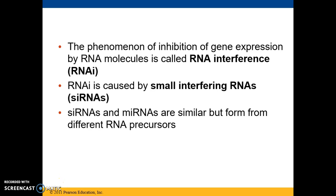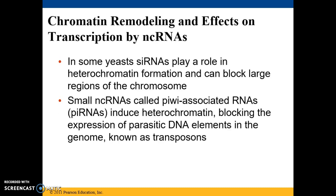Non-coding RNA can impact translation of mRNAs, but they can also impact chromatin structure. In some yeast, small interfering RNAs can play a role in heterochromatin formation — that highly condensed form that blocks regions of the chromosome from gene expression. There are also other non-coding RNAs called piwi-associated RNAs, and these also cause the chromatin to highly coil, blocking expression of portions of their genome.